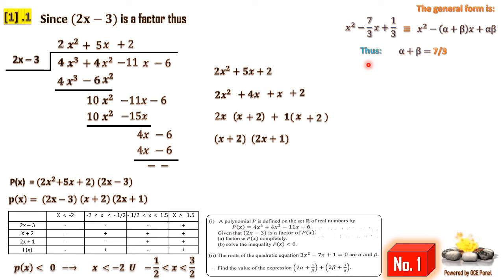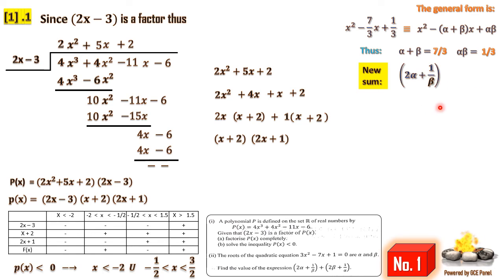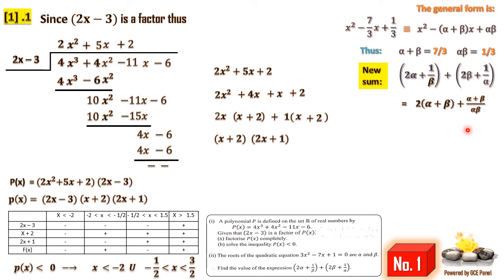Now we find the value of the expression (2 alpha plus 1)/beta plus (2 beta plus 1)/alpha. Expanding: this equals 2(alpha plus beta) plus (1/beta + 1/alpha), which simplifies to 2(alpha plus beta) plus (alpha plus beta)/(alpha times beta). Substituting our values: 2 times (7/3) plus (7/3) divided by (1/3), which equals 14/3 plus 7 equals 14/3 plus 21/3.